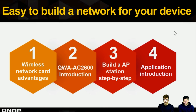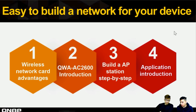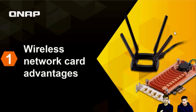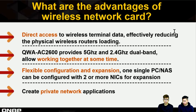There are four ways to build our devices. Bolden will walk through the slides. The wireless network card offers four key advantages: you can make direct access to your own terminal; you can use 5 GHz and 2.4 GHz at the same time because it's dual-band; you can create a flexible configuration and network expansion with one PCI card.